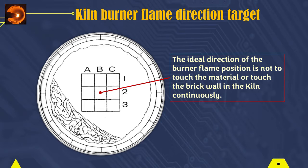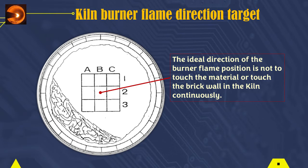The target direction of the kiln burner flame: the ideal direction of the burner flame position is that the flame does not touch the material or touch the brick wall in the kiln continuously.